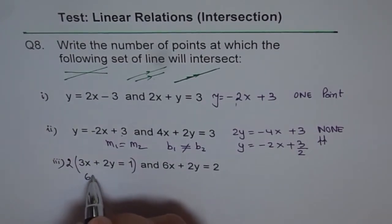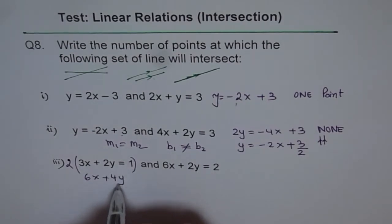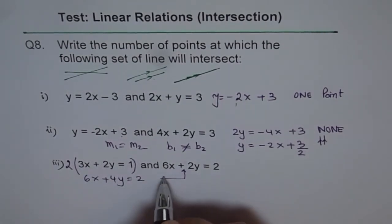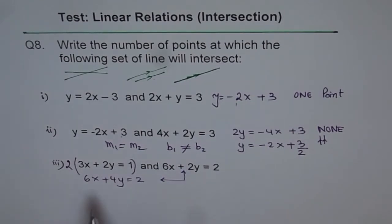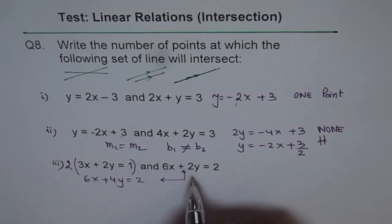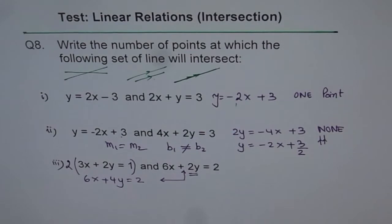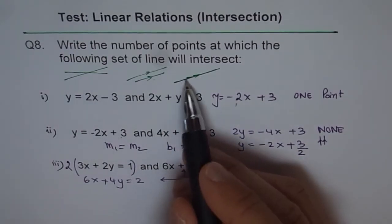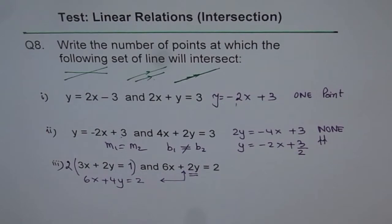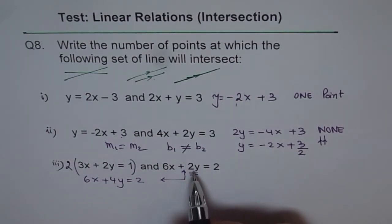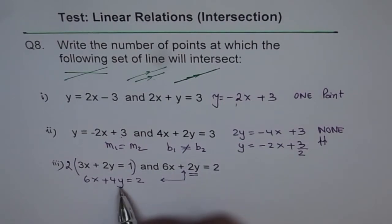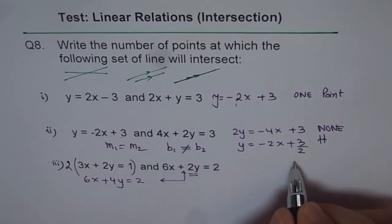We get 6x plus 4y equals 2, which is same as the given equation. 6x plus 4, no, it's different. So that is a difference. It is not the same. So if the two equations are not the same, then this scenario is not there. And here, we can find the slope. Slope, in this case, is different from this line. And therefore, there will be one point of intersection.